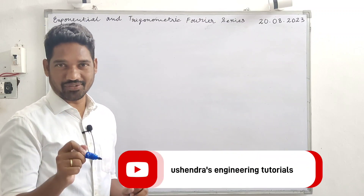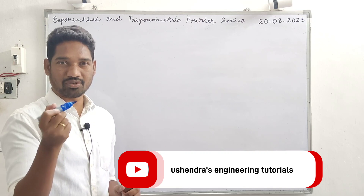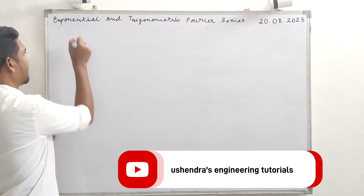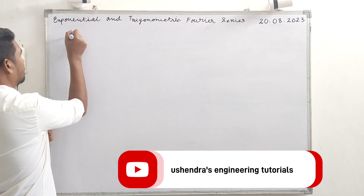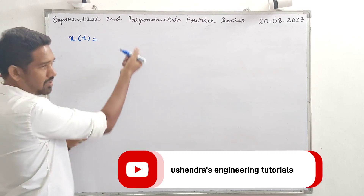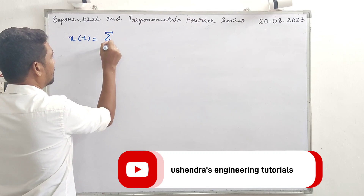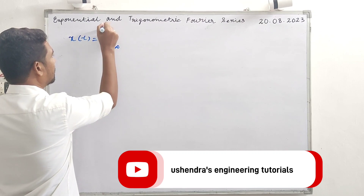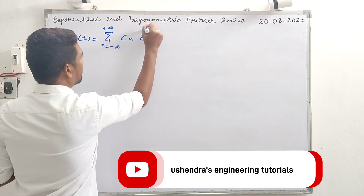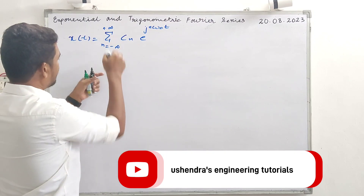Hey guys, Fourier series. Today we look at exponential Fourier series and trigonometric Fourier series — the coefficients relationship derived. We start with the exponential Fourier series: x(t) can be expressed as a summation from n equal to minus infinity to plus infinity of c_n e raised to j n omega-naught t.